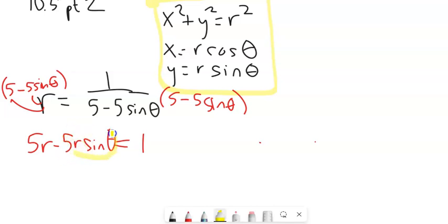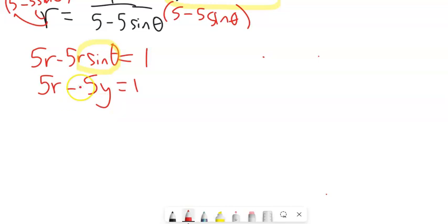So let's just replace that with a y right now. And then we'll worry about the rest of it. So 5r minus 5y equals 1. So far, so decent.